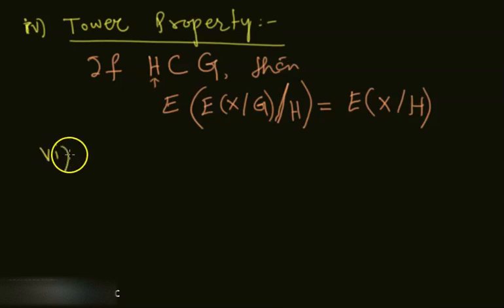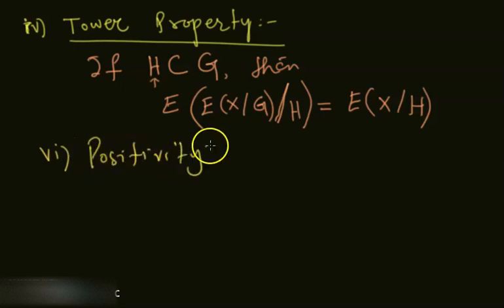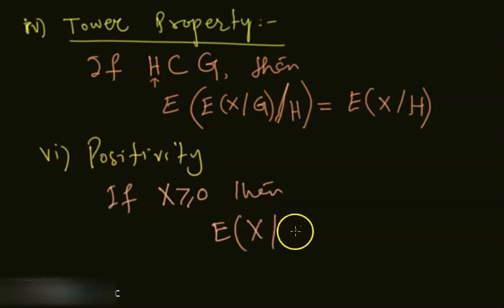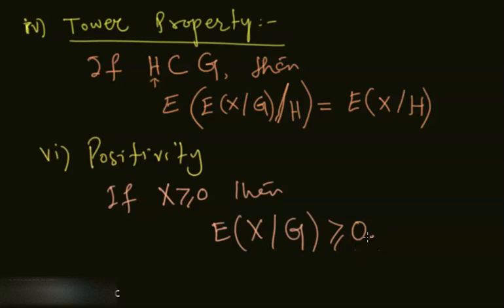Property six is positivity: if the random variable X is non-negative, then its conditional expectation E[X|G] is also non-negative. In the coming videos we will move towards filtrations, then define martingales, and after that we will move towards general stochastic integrals.